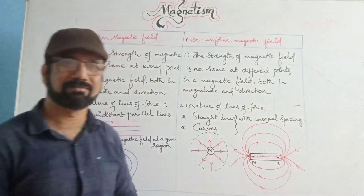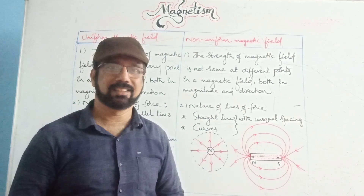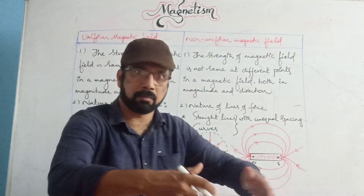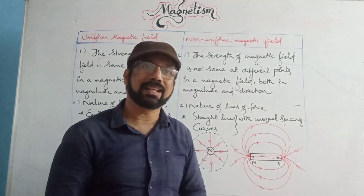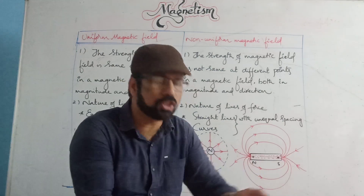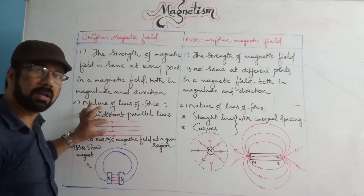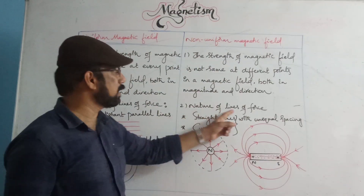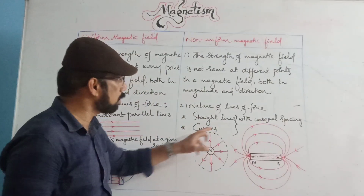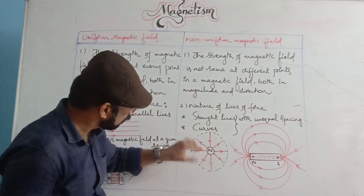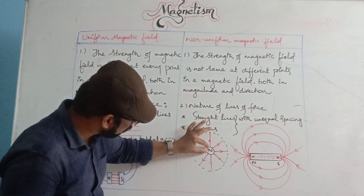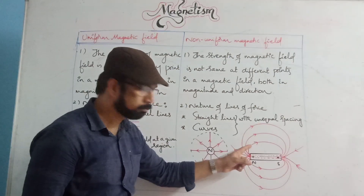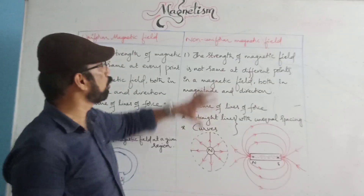Suppose the earth is a huge magnet. Around the earth you can imagine a magnetic field. Since the earth is huge and you are living in a small region, in that region you can take the magnitude and direction of the field as the same, so you can draw equidistant parallel lines for earth's magnetic field in a given region. In the case of a non-uniform magnetic field, the nature of lines of force are straight lines with unequal spacing. As we move away from the north pole, the spacing is changing — this indicates non-uniform magnetic field.